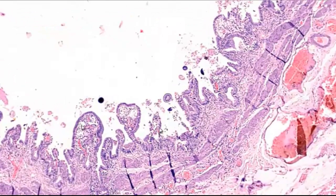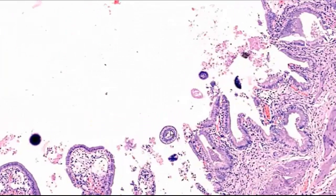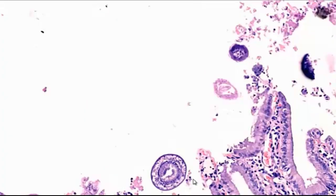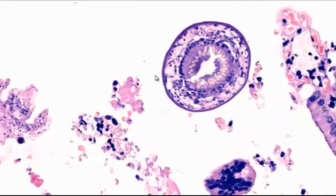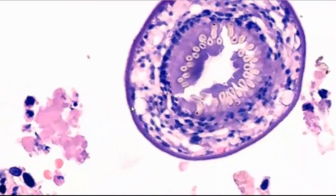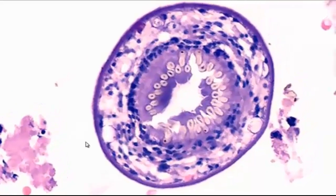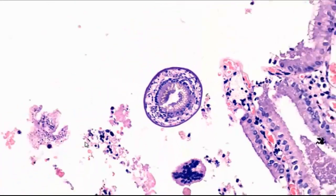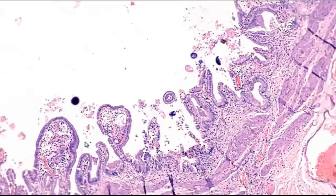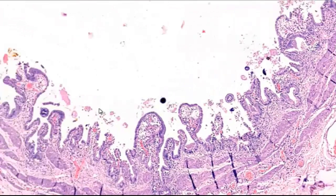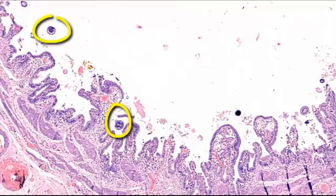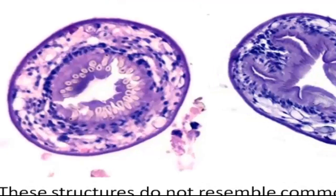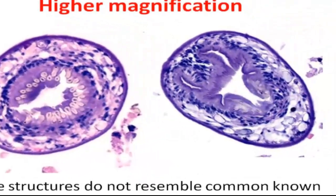We can see chronic inflammatory cells. Now we have some structures lying in the lumen adjacent to the mucosa. At higher magnification, this has a definite structure — it is not part of the villus structure of the gallbladder. There are additional structures here and here. There is no evidence of dysplasia of the mucosa. At higher magnification, we can see this is the structure of a parasite in the gallbladder.